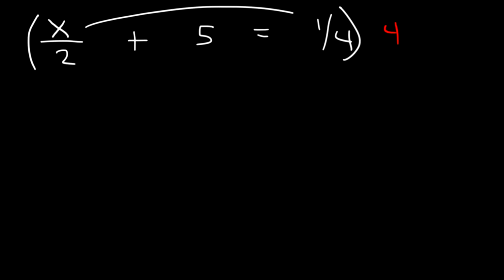So what is x over 2 times 4? If you're not sure, simply multiply them. 4 times x is 4x. So right now we have 4x over 2. Next, 4 times 5 is 20. And 1 fourth times 4 is basically 1. The 4's cancel. So this is what we now have. Now 4x divided by 2 is 2x. So 2x plus 20 is equal to 1.